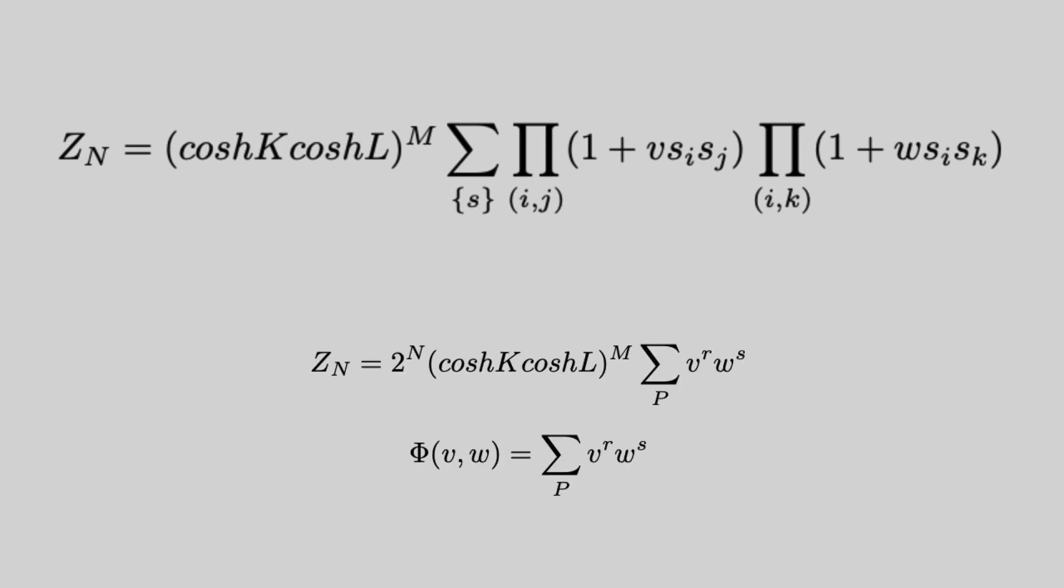That is a closed polygon. So therefore our partition function looks like this now. This 2 to the n factor comes from the degeneracy. And this P denotes that we're summing over all closed polygons, where R and S are the total number of horizontal and vertical lines respectively.